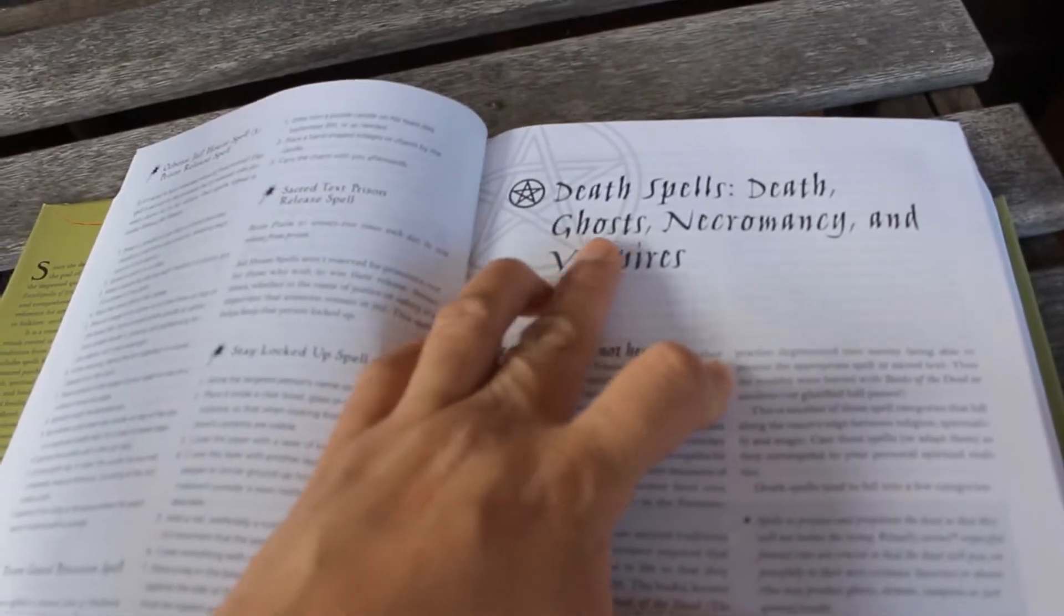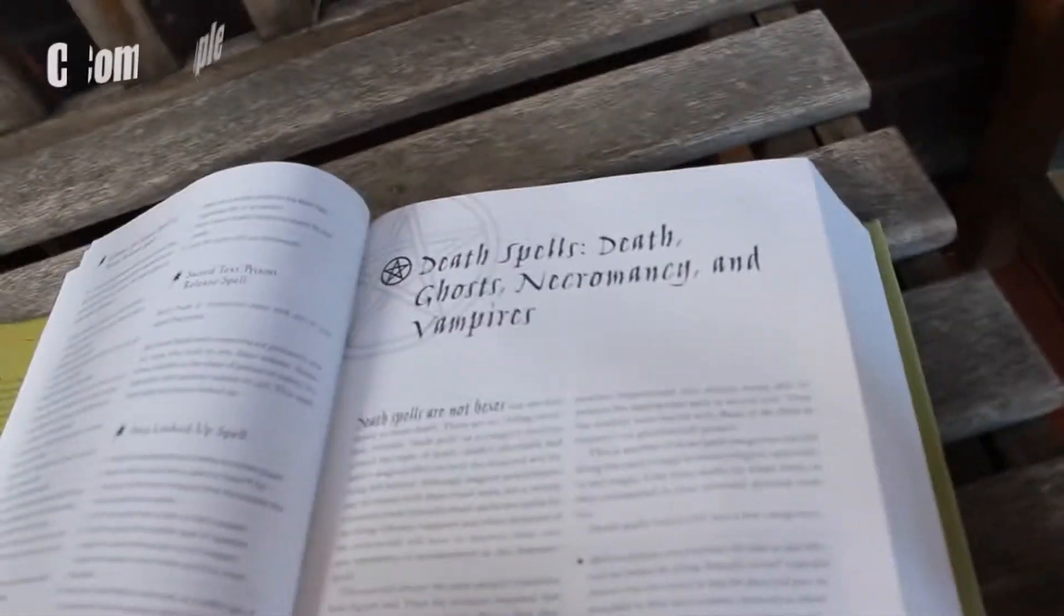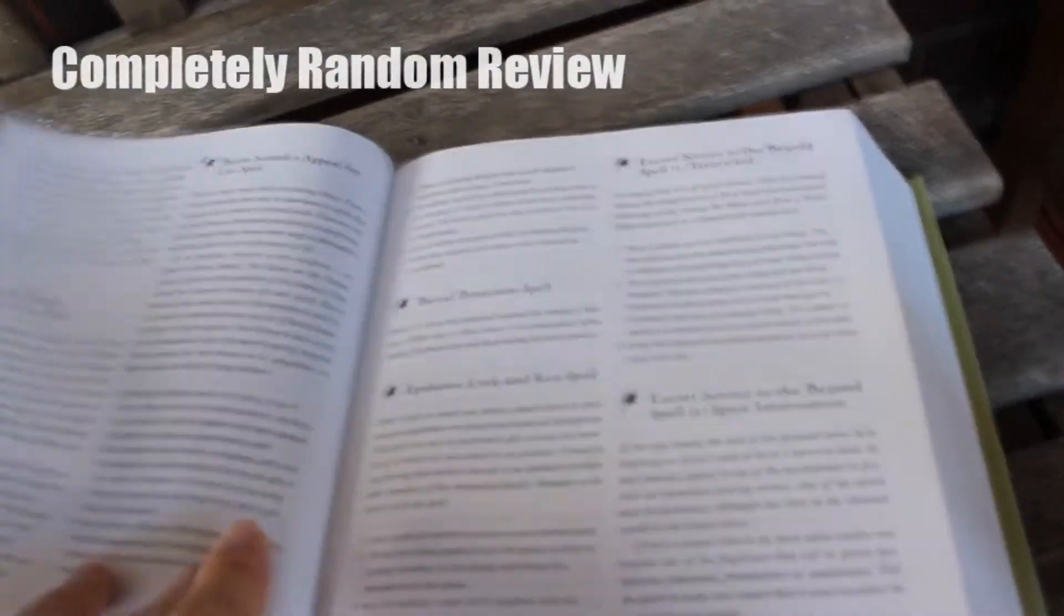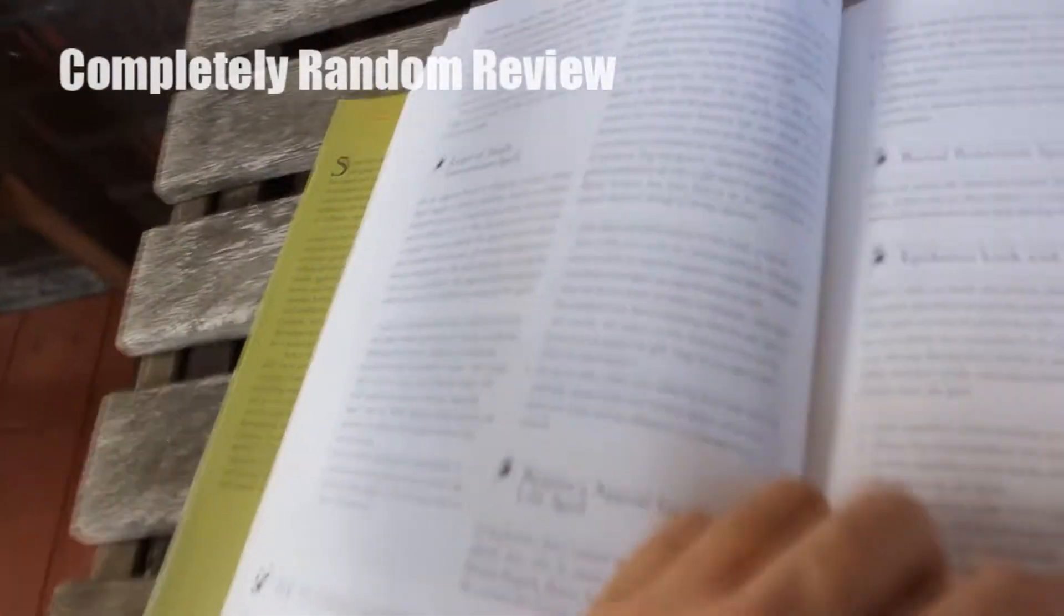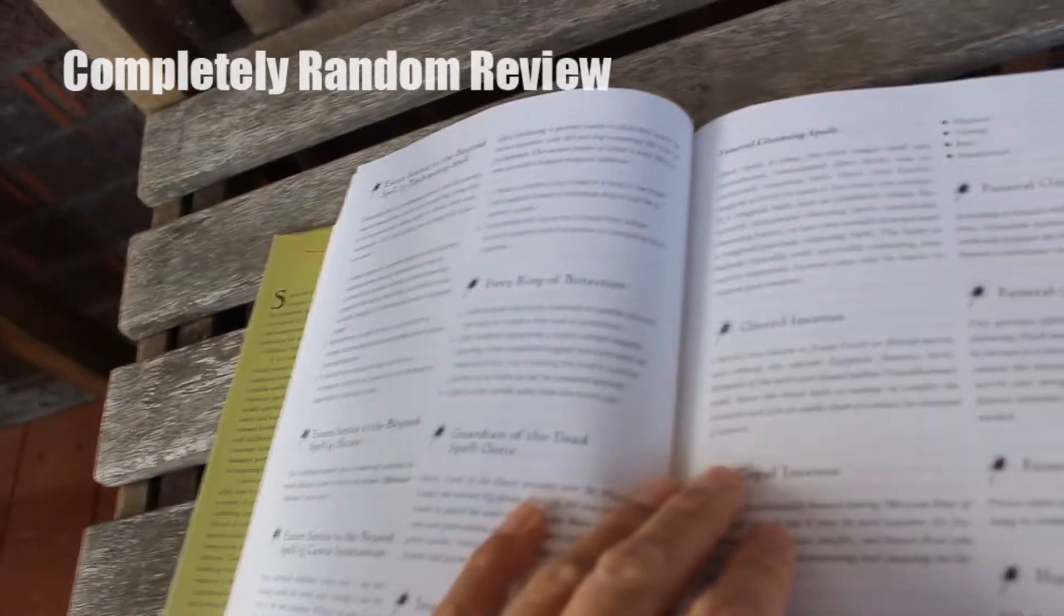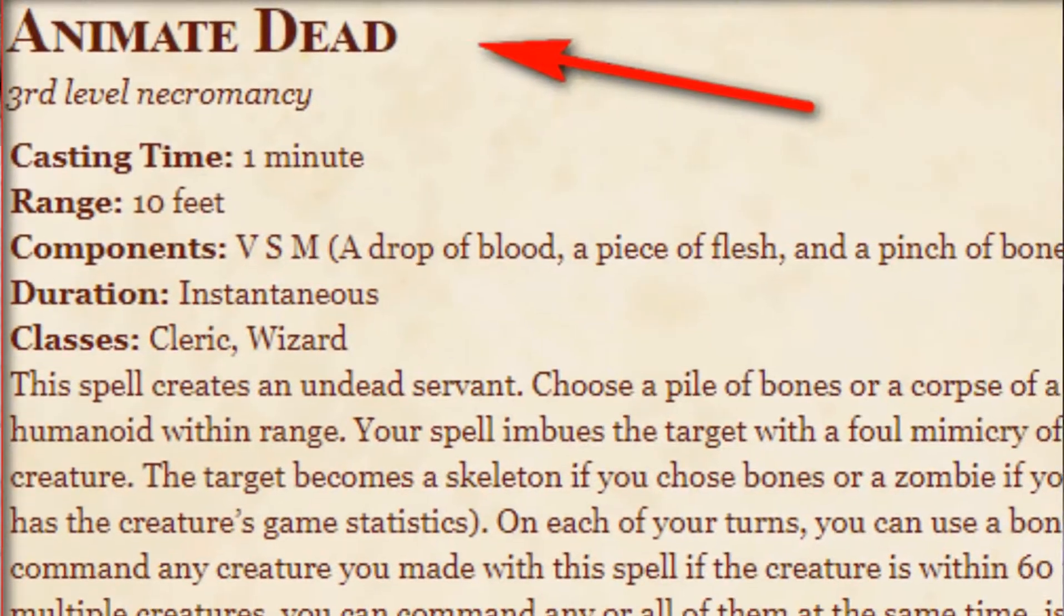But of course, death spells, hot jam, ghost necromancy and vampires. Let's see if it has how to raise the dead. Burial protection. No, I want some, you know, third level spell slot madness. You know, raise the dead. Get three zombies or skeletons.